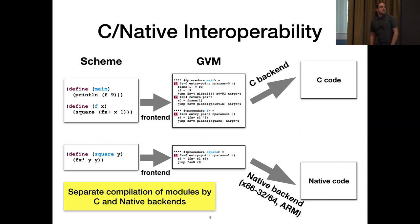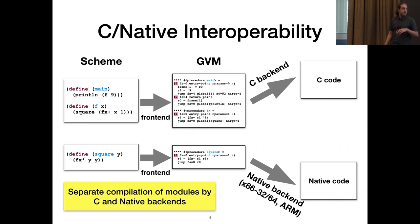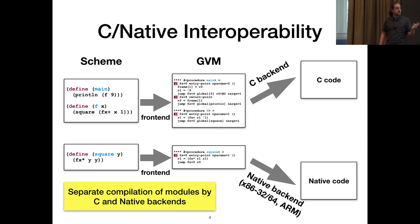During the development, it occurred to us that it could be very useful to have interoperability of the code generated by the C back-end and the native back-end. In other words, being able to call functions compiled with the C back-end from native code, and functions compiled with the native back-end from C code.